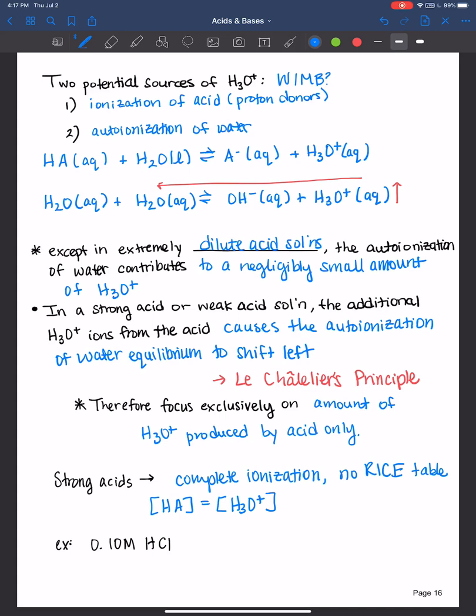So for example, let's say you have a 0.1 molar hydrochloric acid solution and you're asked to calculate the pH. Well, since it's 0.1 molar HCl, it will dissociate completely. And therefore, your hydronium ion concentration at the very end of all the dissociation is 0.1 molar as well.